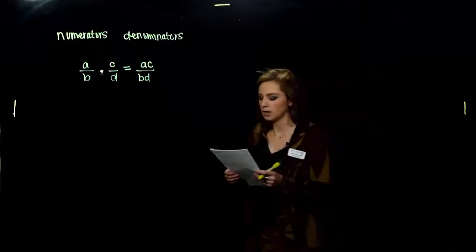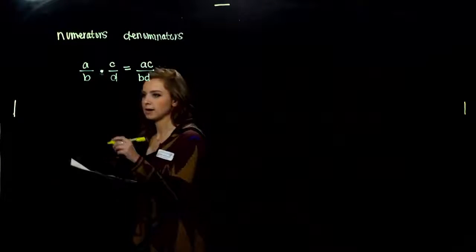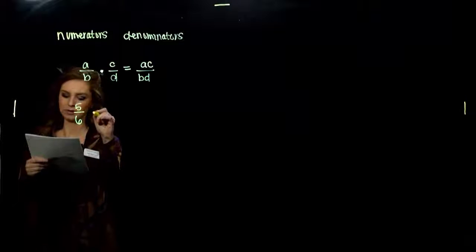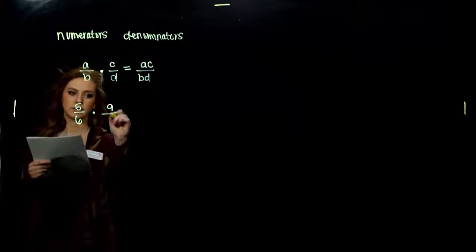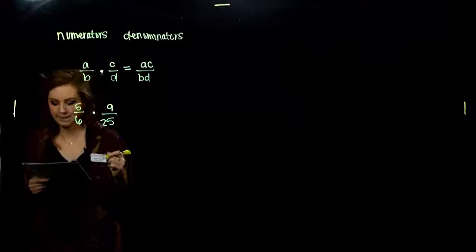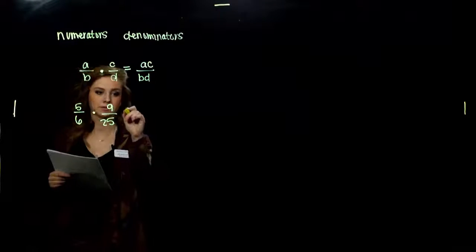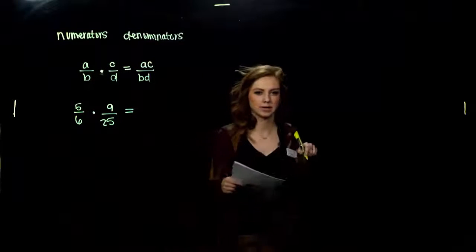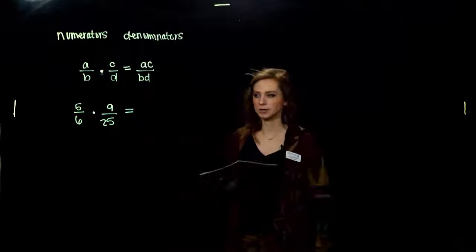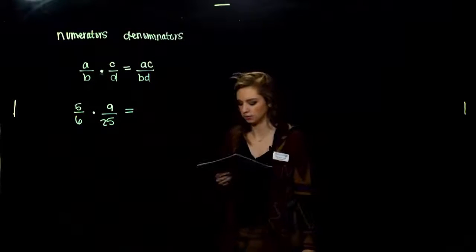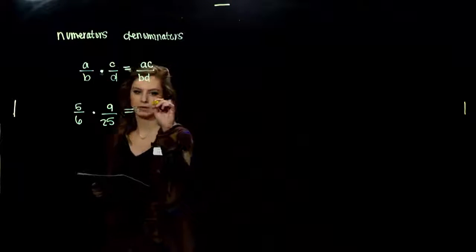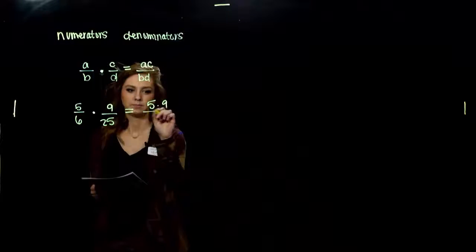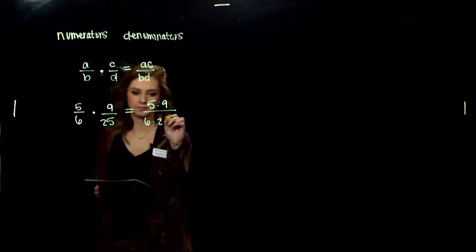Let's do some examples. Multiply 5 over 6 times 9 over 25 and simplify. After I multiply, I want to get it down into the simplest form possible. So, straight across the top, straight across the bottom.